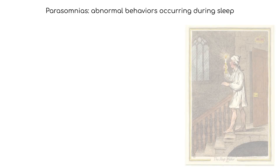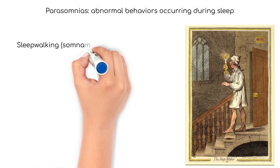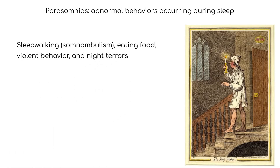Parasomnias are characterized by abnormal behaviors occurring during sleep. These include sleepwalking, somnambulism, eating food, violent behavior, and night terrors, and are associated with the loss of REM paralysis.